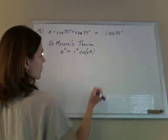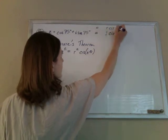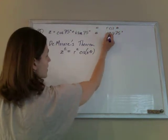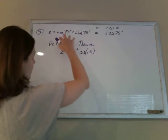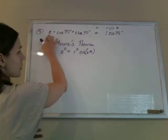And if we're matching this up to kind of a standard form of r cis theta, we can see that the radius, if we were to graph this complex number, the radius would be 1, and the angle would be 75.